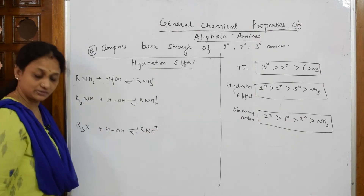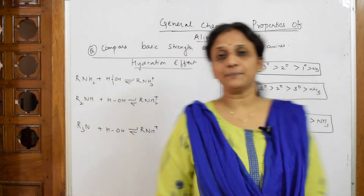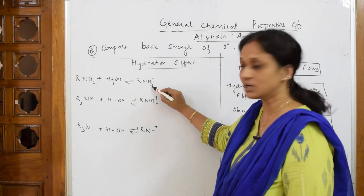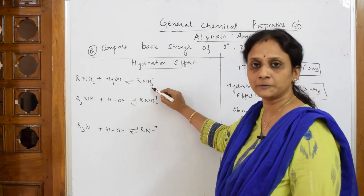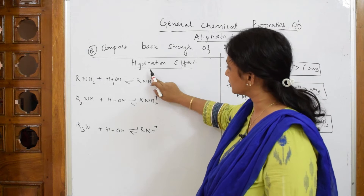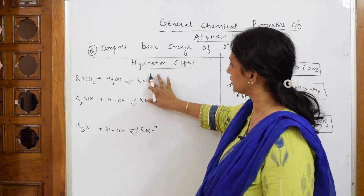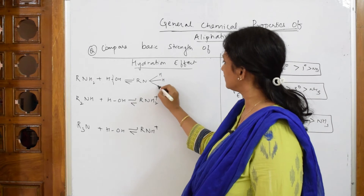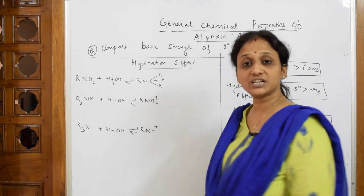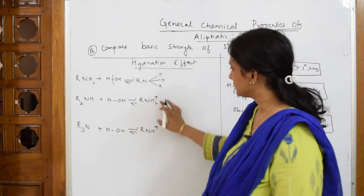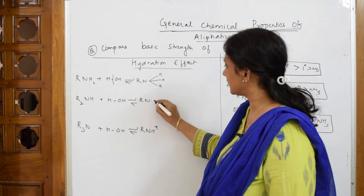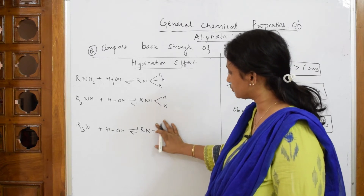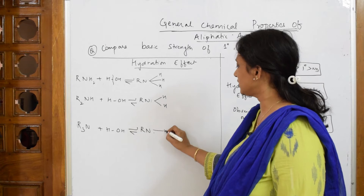When I take a tertiary amine in water, it combines and forms RNH+ plus OH minus. Now, what is actually happening inside this ammonium cation? The primary ammonium cation has three hydrogen atoms, the secondary has two hydrogen atoms, and the tertiary has only one hydrogen atom.